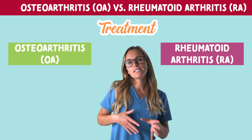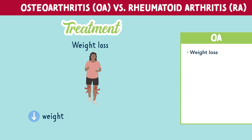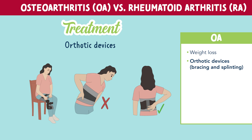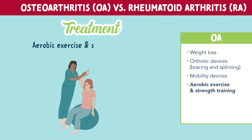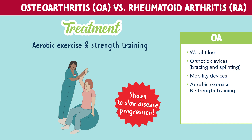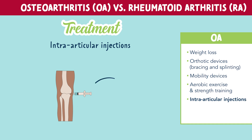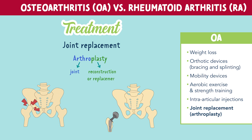Let's look at the treatment options for OA. The first is weight loss if needed — decreased weight means decreased pressure on the joints. They can also use orthotic devices such as bracing and splinting, and mobility devices like canes or walkers. Aerobic exercises and strength training have been shown to slow disease progression. Intra-articular injections of steroids or a gel-like substance into the joint can reduce pain and irritation. Common surgery is joint replacement, called an arthroplasty — arthro means joint and plasty means reconstruction or replacement.